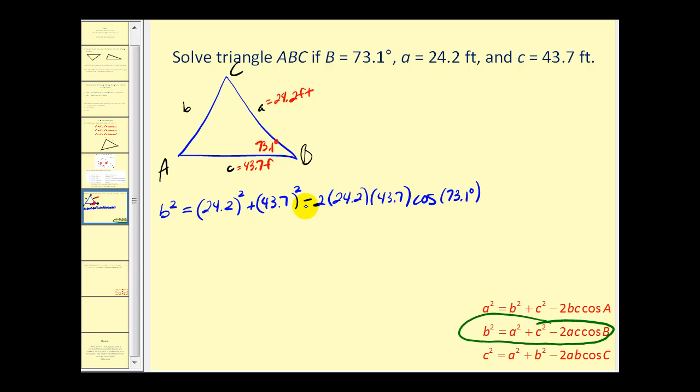To save time, I've already found the value of this right side. B squared is approximately equal to 1880.47. I evaluated this on the calculator, but we don't have time to show it in this video. Now we'll take the square root of both sides of the equation, so B is approximately equal to 43.4.